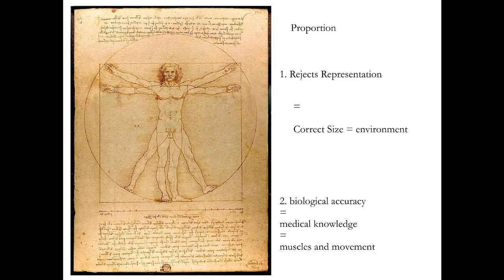That's what proportion does — it creates uniformity of size within an environment. On my canvas, if I have a 10-foot canvas and a 30-foot-long room, everything will be shrunk to one third to make it proportional to everything else in the scene. The other thing is, I want to make things look like reality — we're back to realism. And so what I need to know is how do things work? And that's medical knowledge.